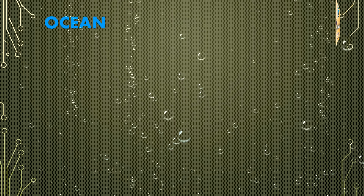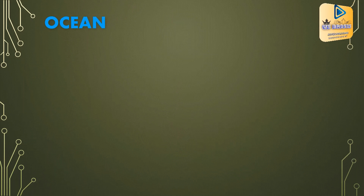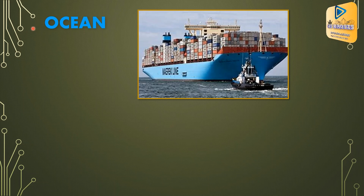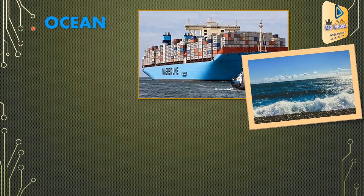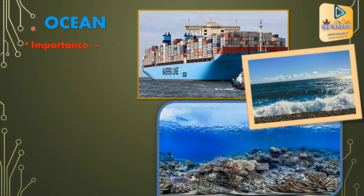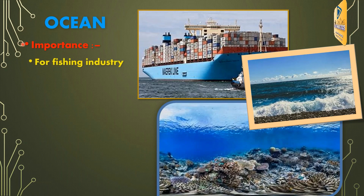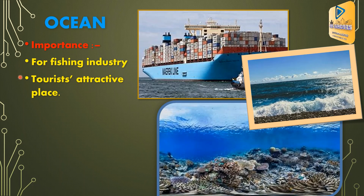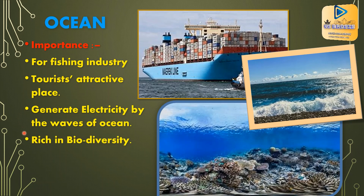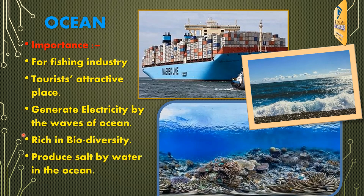Then about the ocean: marine areas that cover most of the Earth's surface are known as oceans. The Indian, Atlantic, Arctic, and Pacific are examples of oceans. The importance of oceans includes use for the fishing industry, being a tourist attractive place, generating electricity from ocean waves, being rich in biodiversity, and producing salt from ocean water.